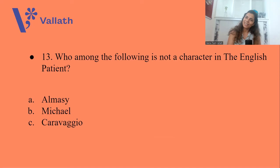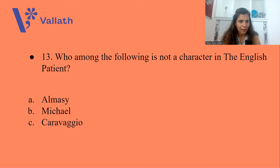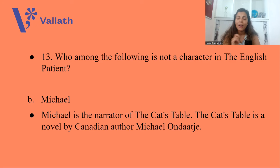Question number thirteen: Who among the following is NOT a character in The English Patient? A. Almasy, B. Michael, or C. Caravaggio. Almasy himself is the English Patient; Caravaggio is a thief. So the answer is option B, Michael — he is not a character in The English Patient. Rather, Michael is the narrator of The Cat's Table, which is a novel by Michael Ondaatje.